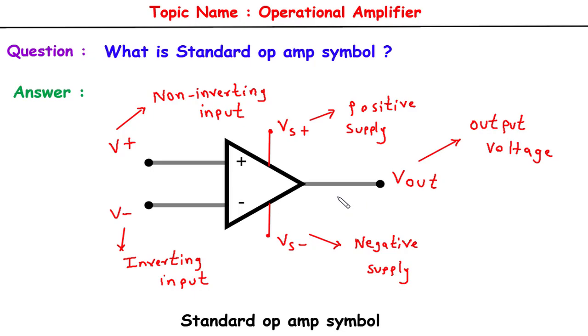The standard op amp symbol consists of a triangle-shaped element, representing the amplifier itself. Inside this triangle, we find two input terminals and one output terminal.